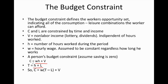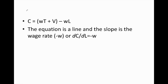Therefore, we can rewrite the above expression as follows. Consumption C is equal to W times (T minus L), which gives us H hours worked, plus V. So this is another way to re-express the budget constraint. We can go further to express consumption as WT plus V minus WL.